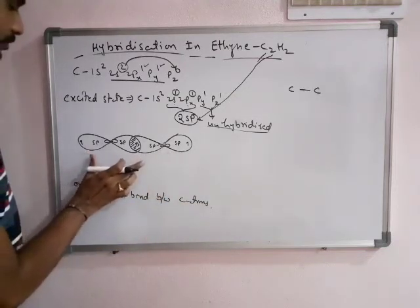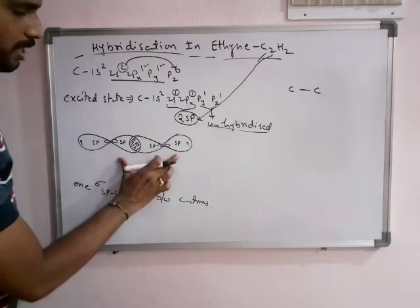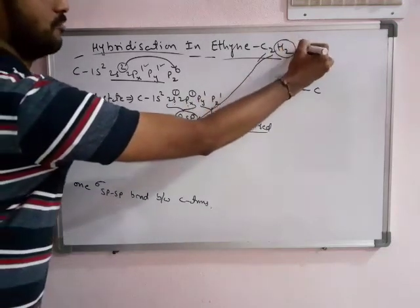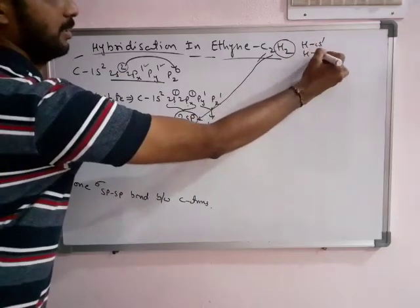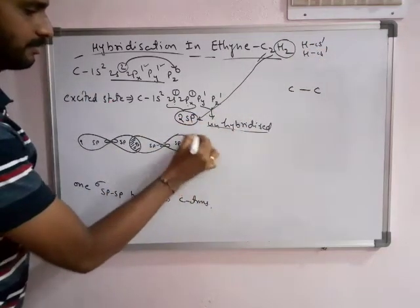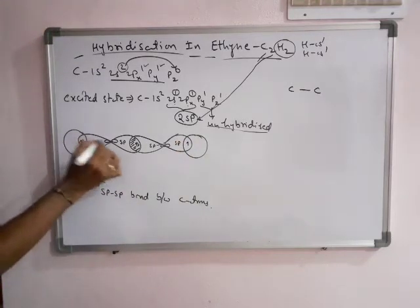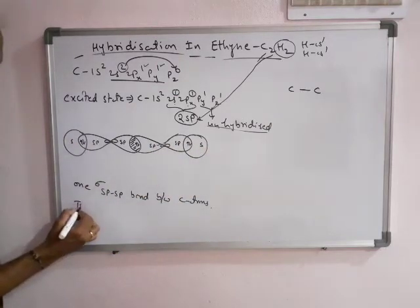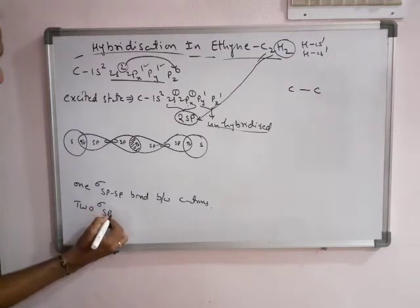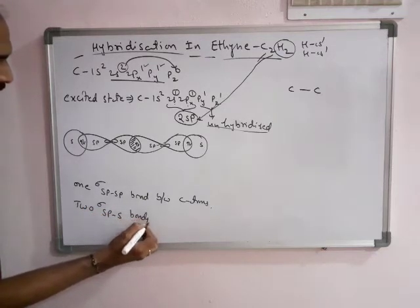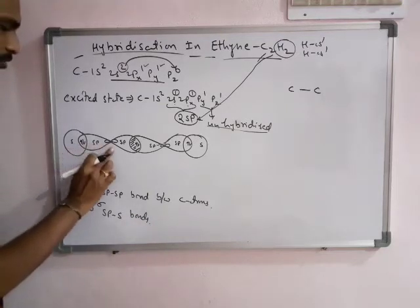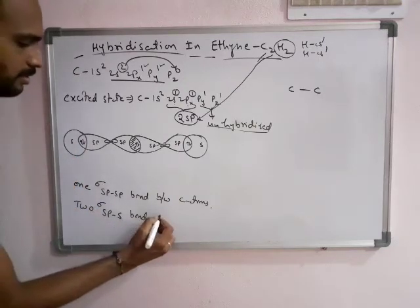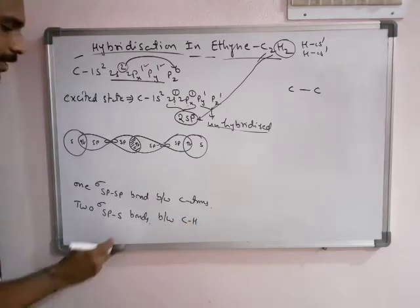Now, the remaining sp hybrid orbitals having unpaired electrons form bonds with hydrogen. There are two hydrogen atoms, each having one electron. They overlap with the sp hybrid orbitals of carbon. There is a formation of two sigma sp-s bonds, formed by the overlapping of sp of carbon and s of hydrogen. These are called sigma sp-s bonds, formed between carbon and hydrogen atoms.